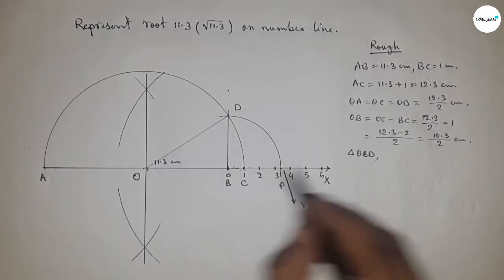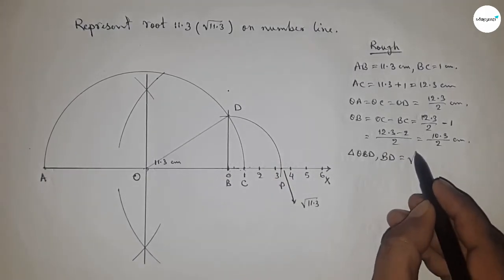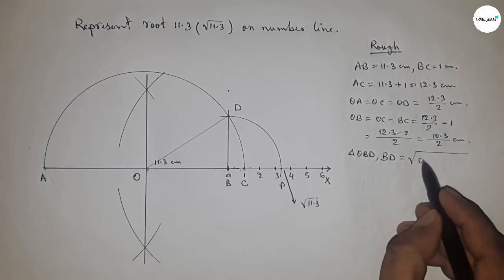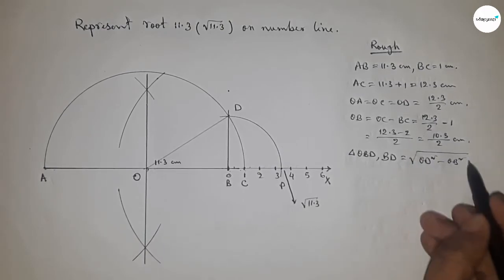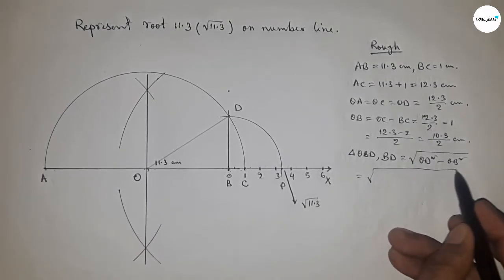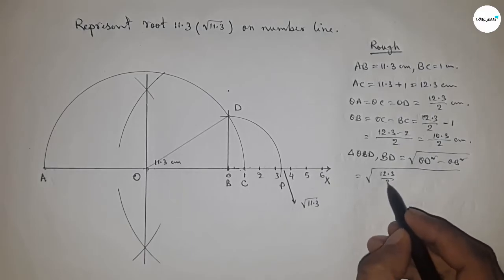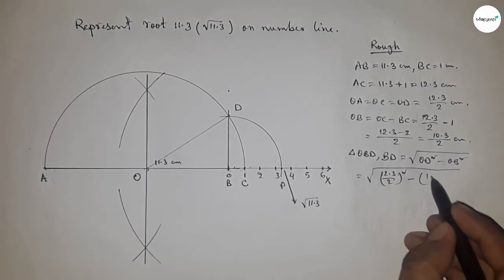We can write BD equal to, by Pythagoras theorem, root over hypotenuse square minus base square. So OD square minus OB square. Now putting the value of OD and OB.